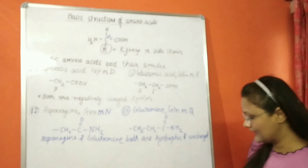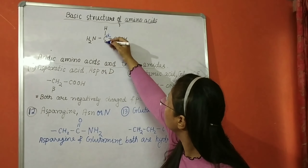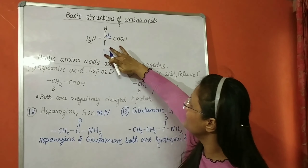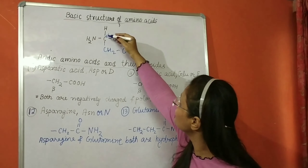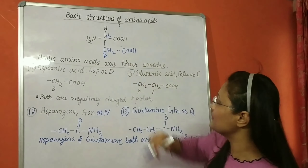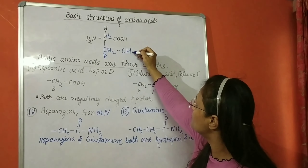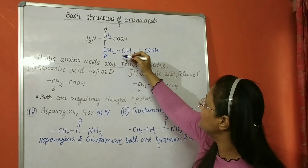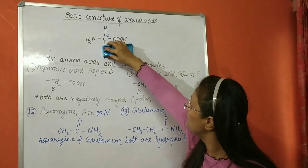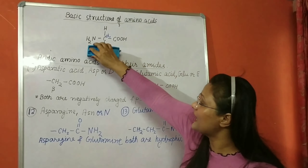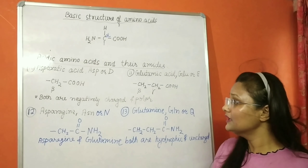The main carbon is the alpha carbon. The next carbon in the side chain is the beta carbon, then gamma, then delta. In aspartic acid the COOH is attached to the beta carbon, and in glutamic acid the COOH is attached to the gamma carbon. If anywhere 'beta' is written, it means a functional group is attached to the beta carbon.